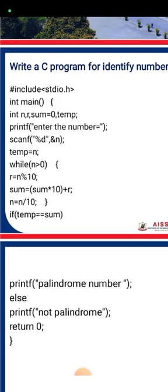After the opening curly bracket, we declare the variables: integer n, r, sum equal to 0, and temp. Here, n is the variable used to store the number entered by the user to check if it is palindrome or not. r is used for the remainder. sum is initialized to 0. temp is a temporary variable used to store the original value of n so we can compare it later.